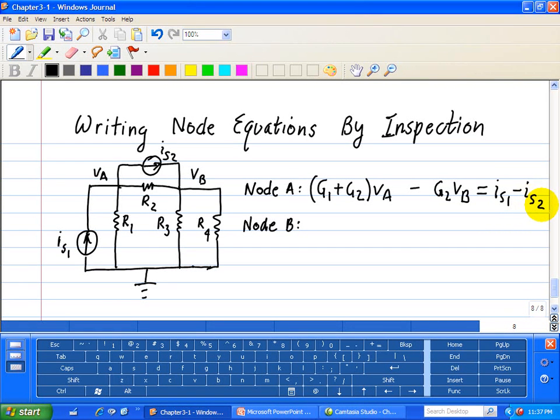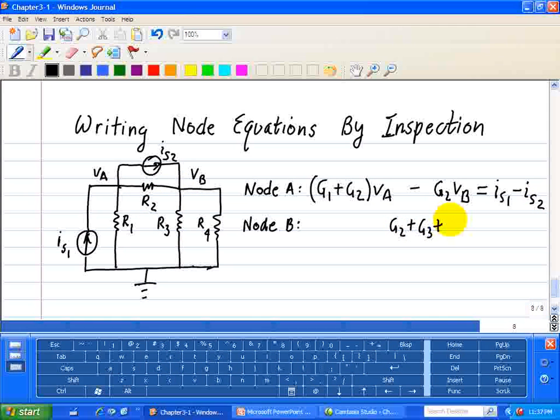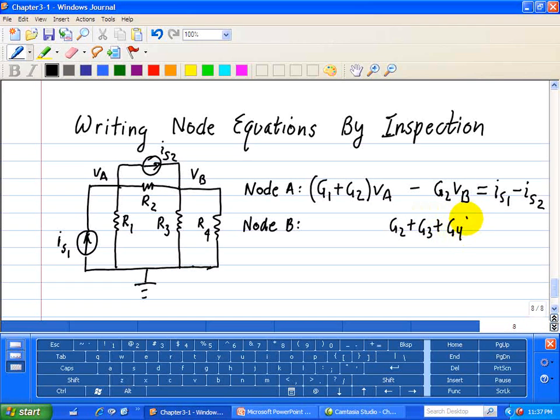Now for node B, we see that we have G1, R2, R3, and R4 connected. So that's basically G2 plus G3 plus G4 times VB.